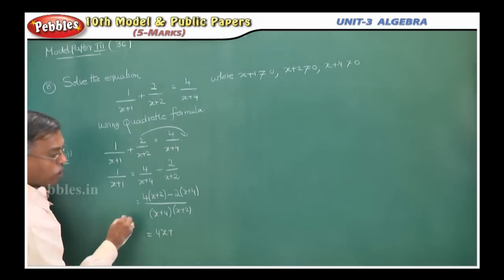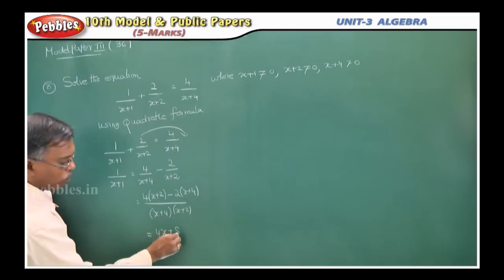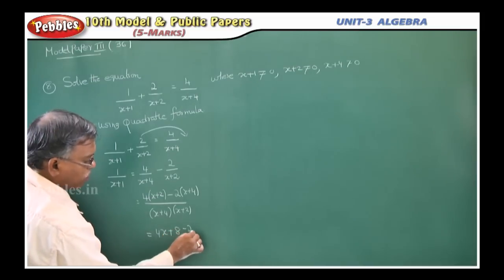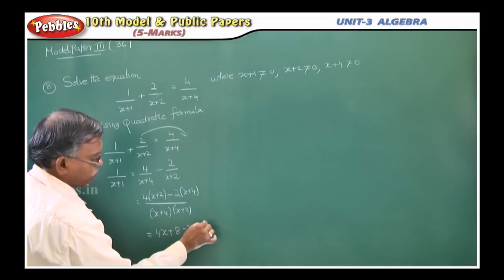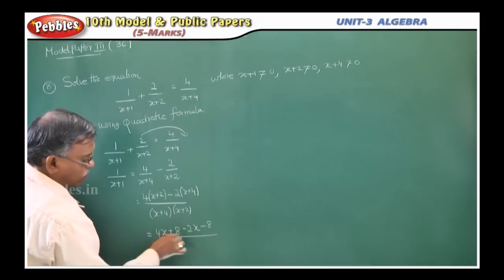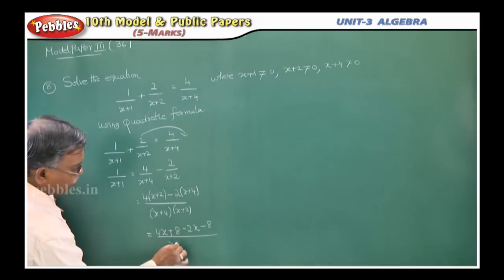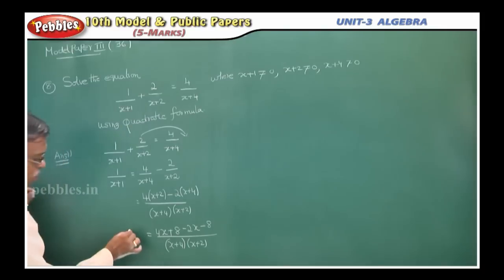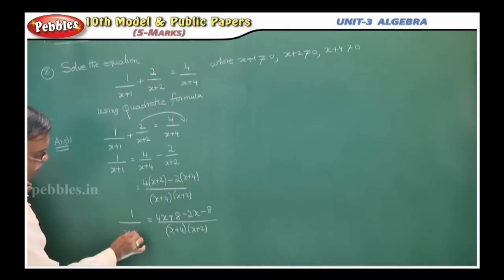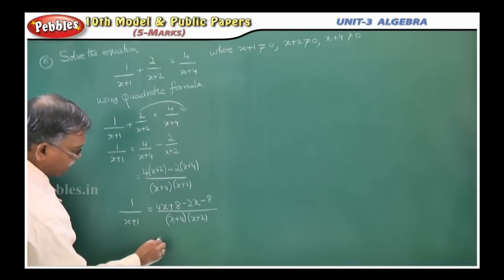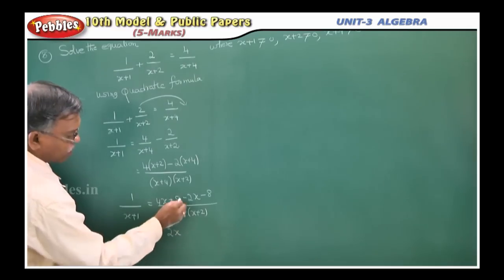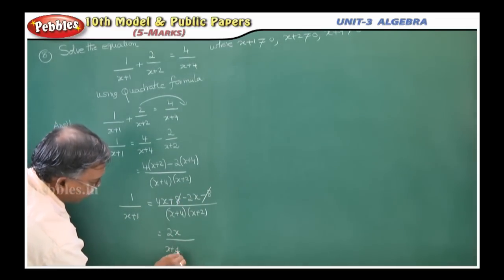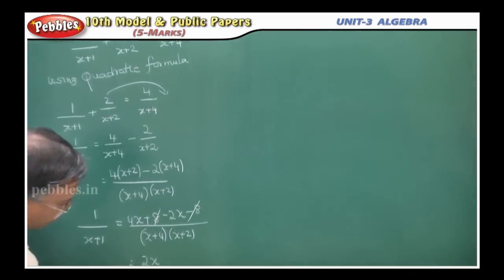Now multiply out the numerator: 4 times x = 4x, and 4 times 2 = 8. Then minus 2 times x = −2x, and minus 2 times 4 = −8. So the numerator becomes 4x + 8 − 2x − 8, divided by (x+4)(x+2). The 8 and −8 cancel, and 4x − 2x = 2x. So we get 2x over (x+4)(x+2).